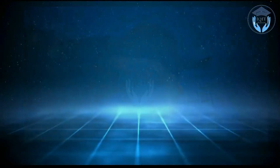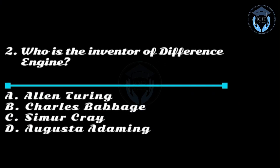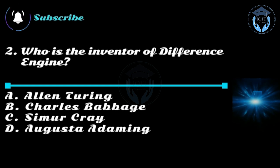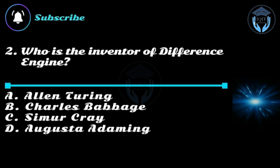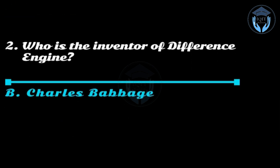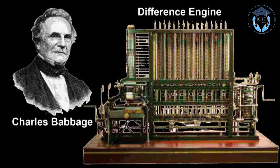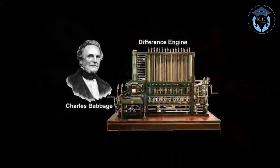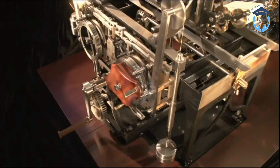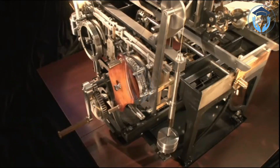Question two: Who is the inventor of the difference engine? Option A: Alan Turing, option B: Charles Babbage, option C: Seymour Cray, option D: Augusta Ada King. Answer: option B, Charles Babbage. The difference engine was designed by Charles Babbage, an English mathematician and inventor, in the 19th century. Babbage is often considered one of the fathers of computing.